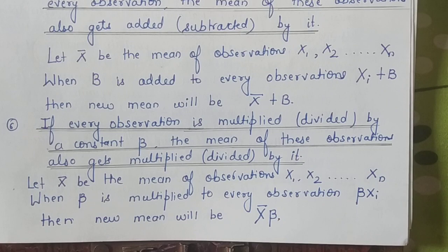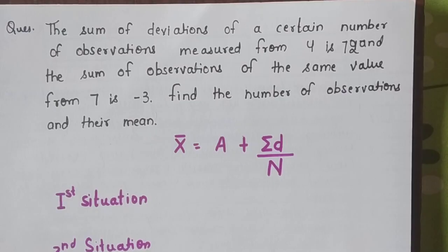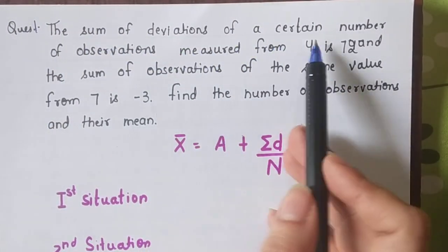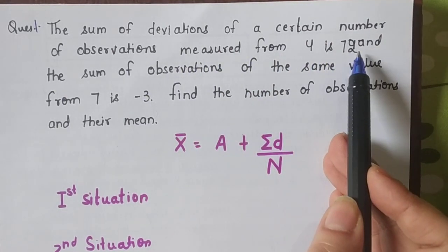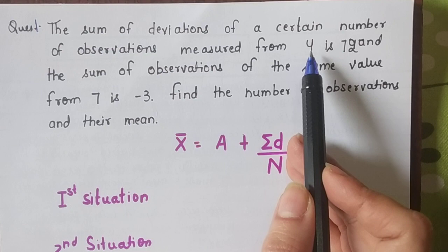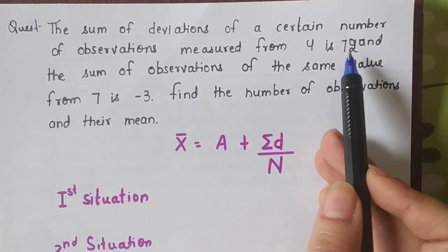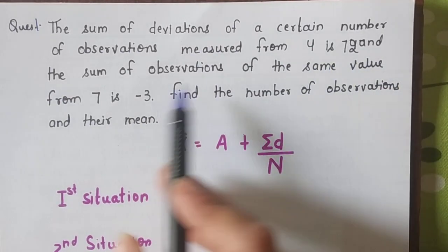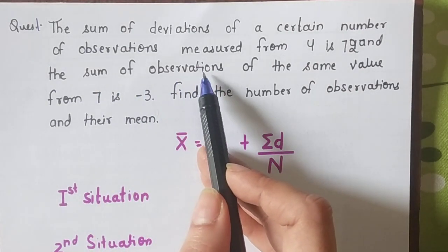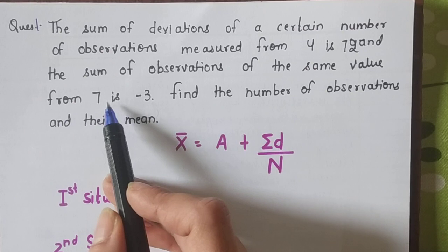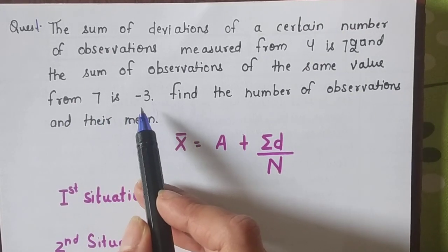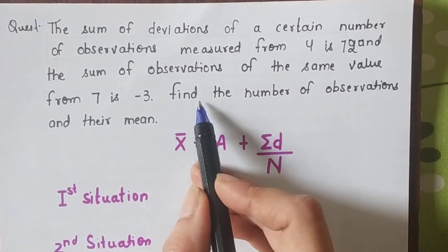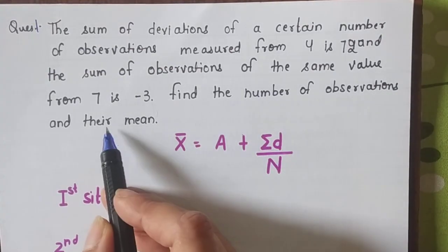Now numerical problems on the basis of these properties. The very first numerical: The sum of the deviations of a certain number of observations measured from 4 is 72. Then the sum of the deviations of the same observations from 7 is minus 3. You have to tell in this particular situation, what was the number of observations and how much is its mean?